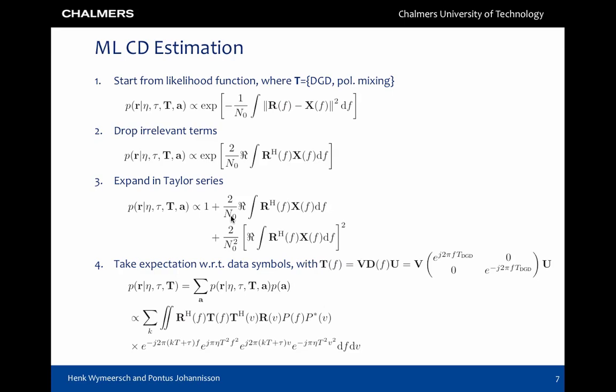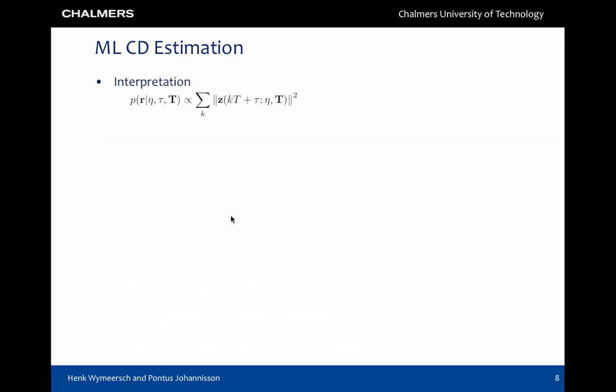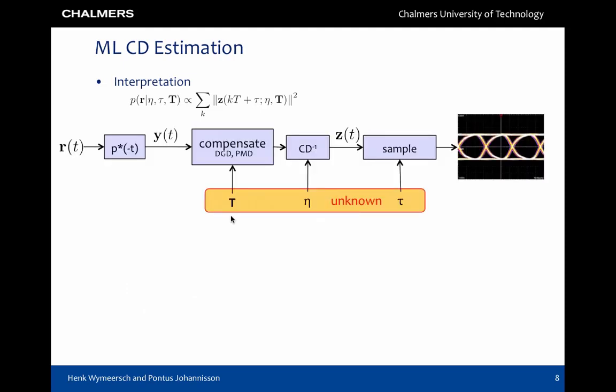However, if we go back to the time domain, we see that the likelihood function can be expressed in a concise way. This expression can be interpreted as follows. The signal Z is obtained by passing the observed signal r to a filter matched to the transmit pulse, corrected for polarization mixing and DGD, and corrected for chromatic dispersion. This signal is then sampled at times kT plus tau.